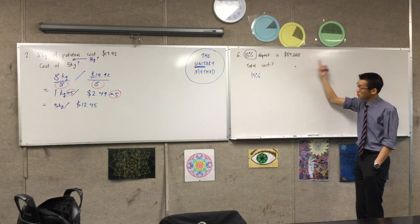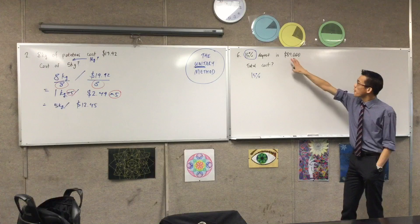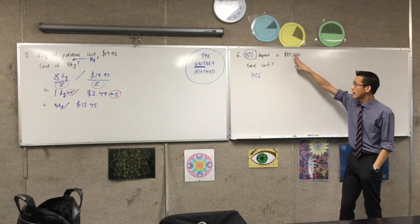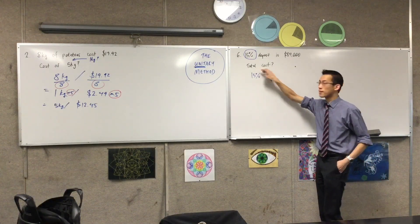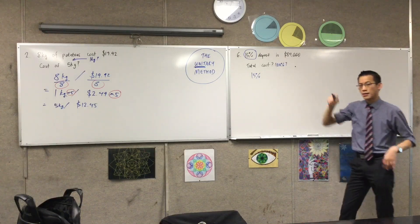you've got 15% of a deposit on like a house or something like that. And that's $84,000, which is actually not too bad a price for a house. So if this is 15% and I want to work out the total cost, what I'm after is 100%, right? That's really what I'm asking.